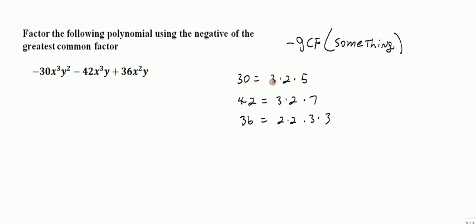So 30 we could factor as 3 times 2 which is 6 times 5. 42 we could factor as 3 times 2 which is 6 times 7. And 36 would be 2 times 2 is 4, and then 3 times 3 is 9 so 4 times 9 is 36. So each of these coefficients we have broken down into prime numbers.